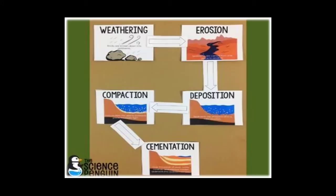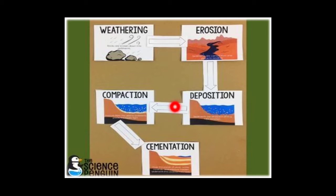Looking at the picture: first, weathering breaks the rocks; then erosion carries them away by agents like running water, wind, glacier, and waves. They are deposited in a low-lying area, layer upon layer. The overlying layers compress the lower layers, and finally they become cemented. Cementation means compounds of lime and calcium fill the gaps between sediments, making them hard to form sedimentary rock.